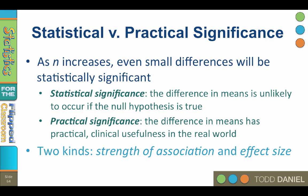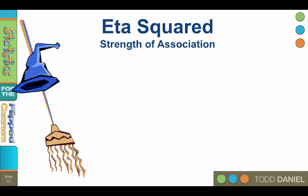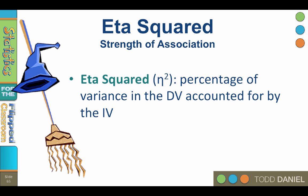There are two kinds of practical significance: strength of association and effect size. Strength of association is a measure of the percentage of variance in the dependent variable accounted for by the independent variable. In an ANOVA, that measurement is eta squared.